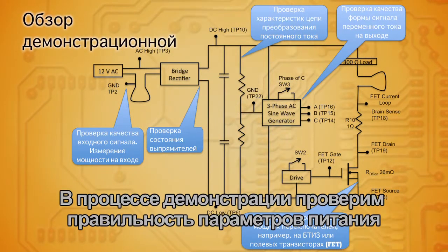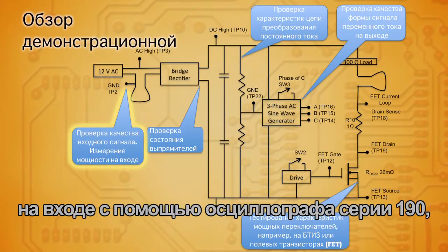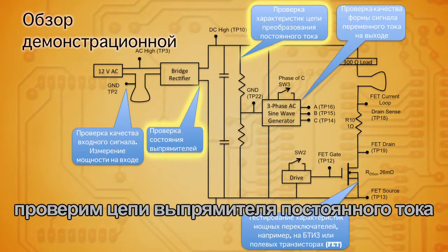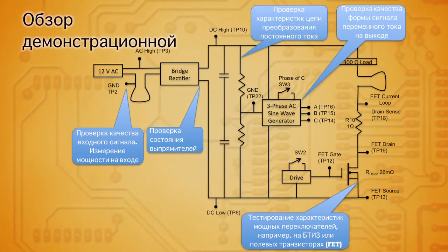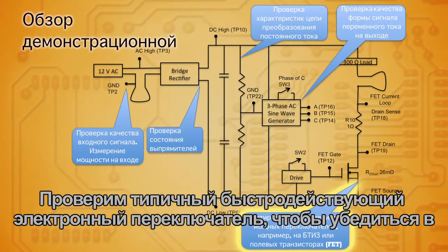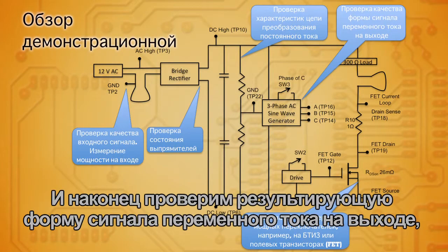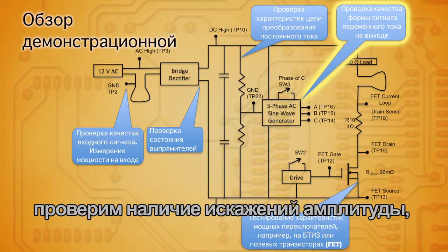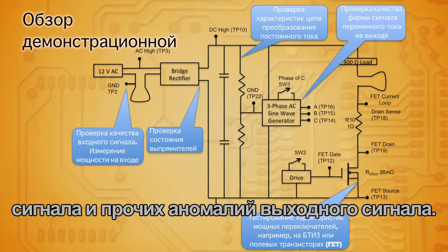Through the demonstration, we'll use the 190 series oscilloscope to look at and validate the integrity of the input power, check the DC rectifier circuits and the operation of the rectifier circuits. We'll look at a typical high-speed electronic switch to see that it's performing correctly and not causing any transients on the output. And finally, we'll also look at the resultant AC output waveform, checking for amplitudes, signal distortion, and any anomalies we may find on the output signal.